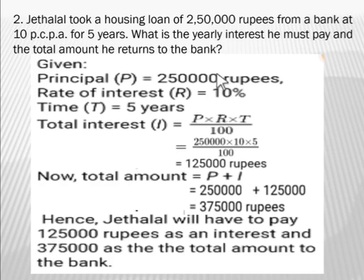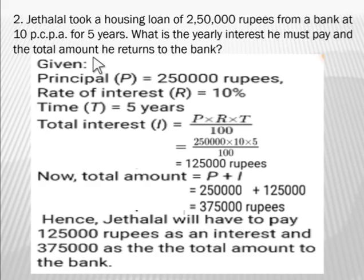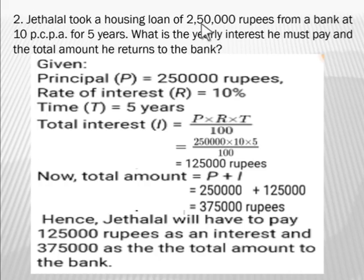Next example: Jethalal took a housing loan of 2,50,000 rupees from a bank at 10% per annum for 5 years. What is the yearly interest he must pay and the total amount he returns to the bank? Here we have to find the total interest and the total amount. As he has taken a loan, he has to return the principal along with interest to the bank.